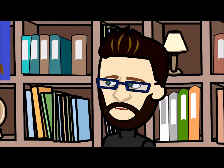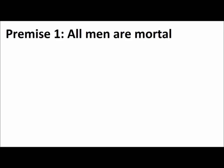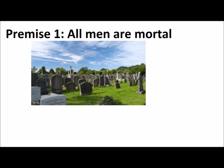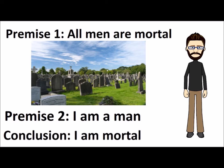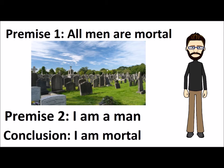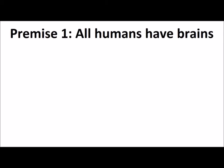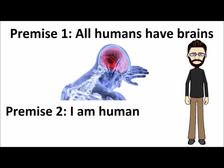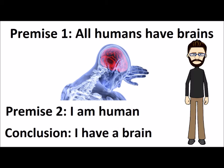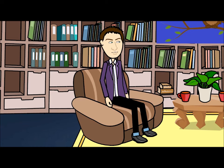To give an example of deductive reasoning: premise one, all men are mortal; premise two, I am a man; conclusion, I am mortal. Or another one: premise one, all humans have brains; premise two, I am human; so conclusion, I have a brain. In each of these, if the premises are true, the conclusion is certain.